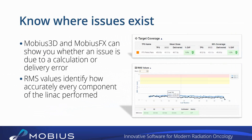A question came across: how is Mobius 3D different from a treatment planning system? Well, the big difference is that Mobius 3D doesn't have any optimization capabilities. It's not designed to tell you what are the best angles and shapes of your MLCs to treat a patient. Other than that, there's not a whole lot of difference. In fact, the calculation algorithm in there is actually better than some treatment planning systems. The biggest difference is that it's not designed to create treatment plans — it's designed to QA treatment plans.